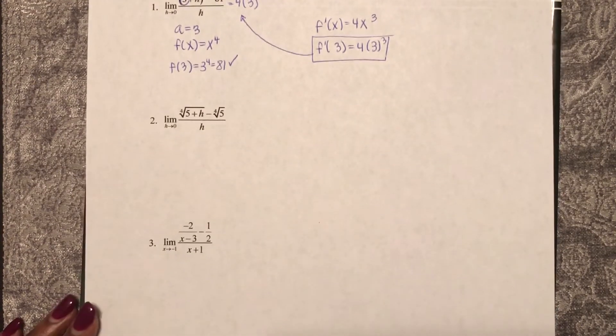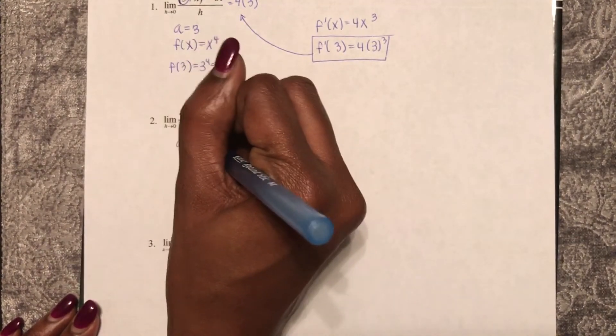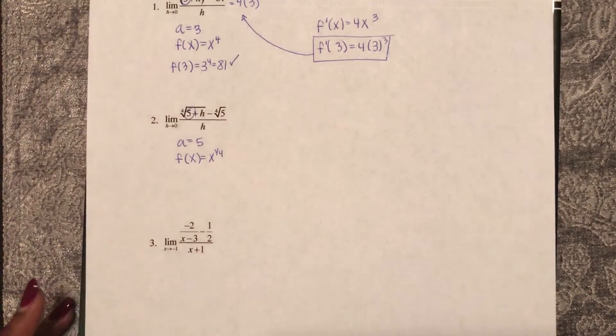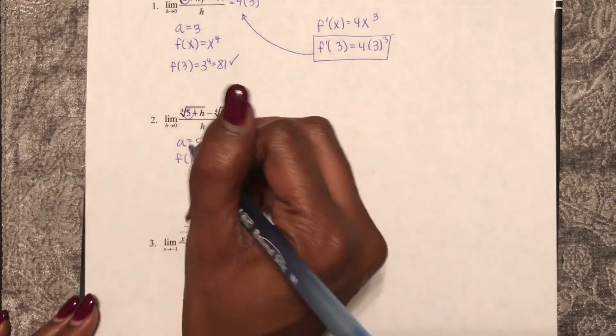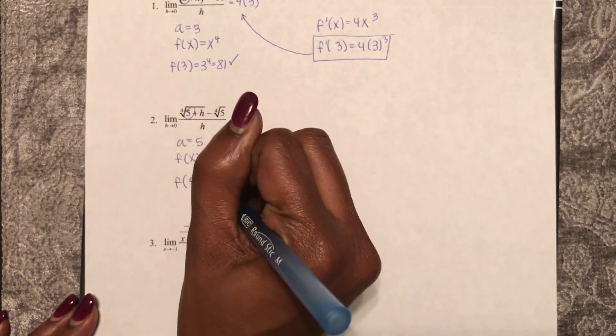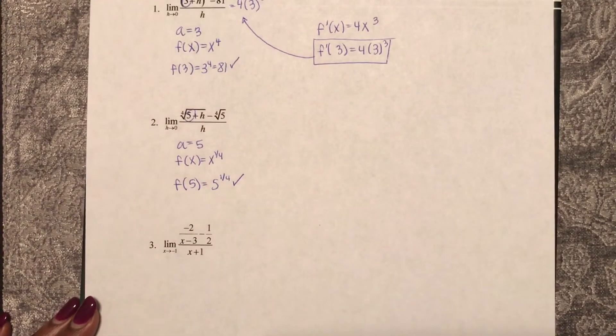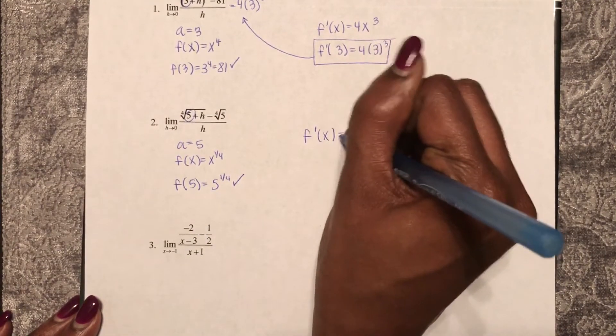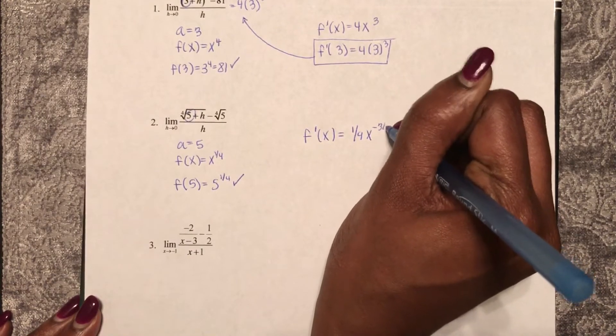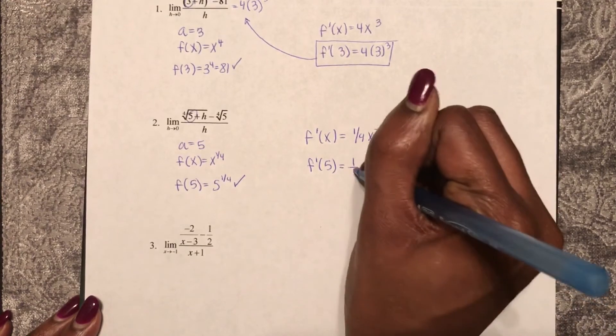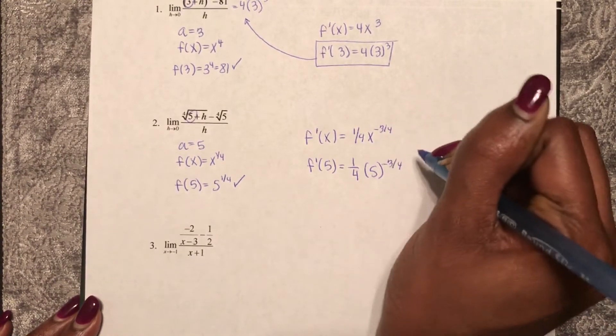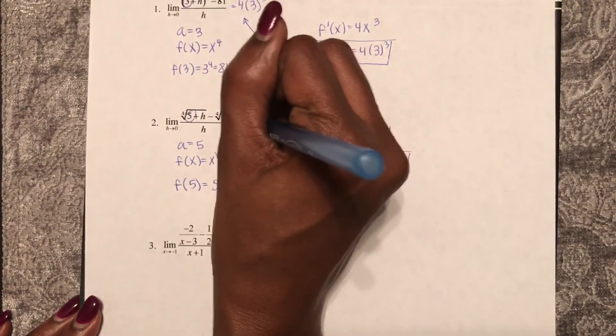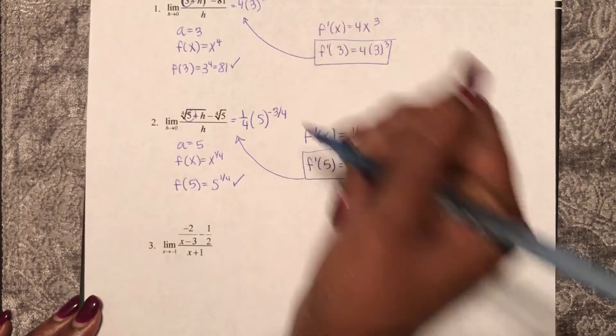Moving on to the second one, once again, looking at this, I would say a equals 5. So f of 5 is 5 to the 1/4th, check. So this is telling me to find the derivative of f of x at this value. So f prime of x equals 1/4th times x to the negative 3/4ths. So f prime of 5 is 1/4th times 5 to the negative 3/4ths. So this limit as a derivative equals 1/4th times 5 to the negative 3/4ths.